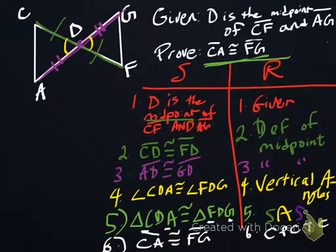What it means is, since this whole shape and this whole shape are the same shape, step five, then the parts that make it up are the same, step six.